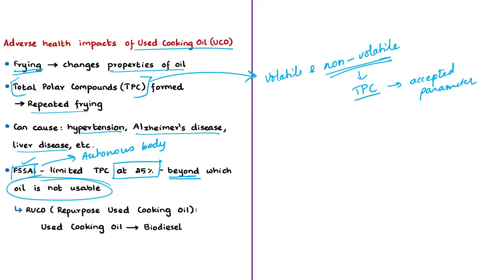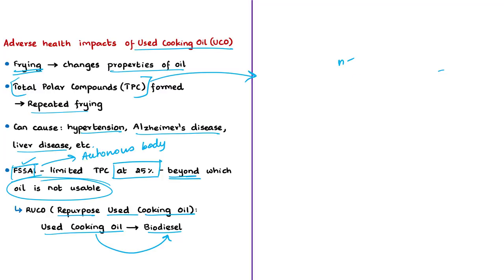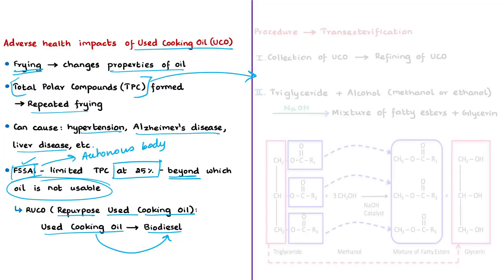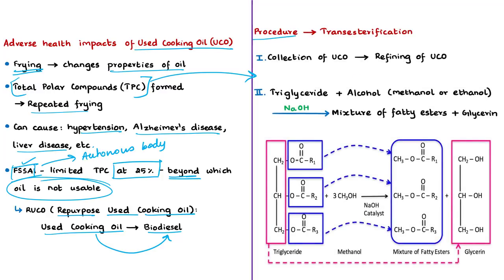To enable the collection and conversion of used cooking oil to biodiesel, FSSAI introduced a program called RUCO — Repurpose Used Cooking Oil. RUCO aims at converting large amounts of used cooking oil into biodiesel, cutting down fuel imports, reducing carbon emissions, and tackling health issues caused by reused cooking oil.